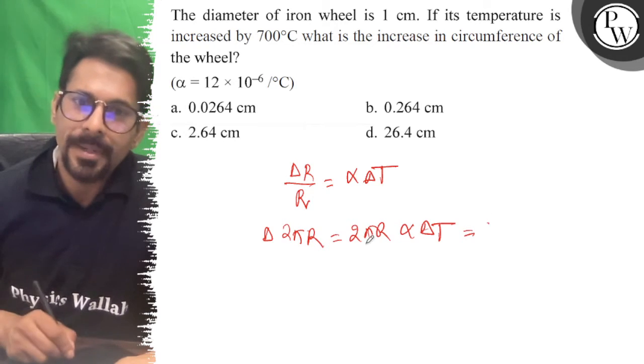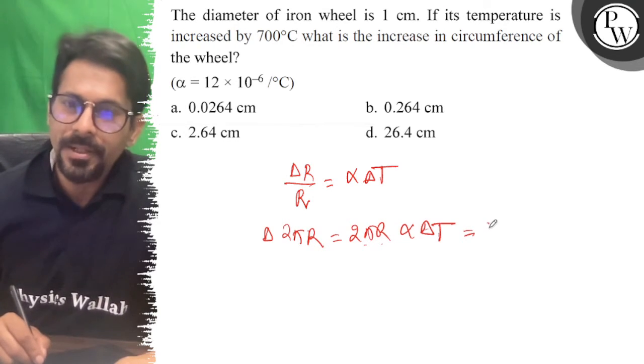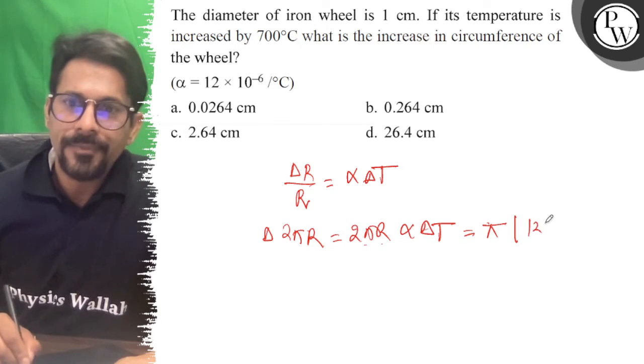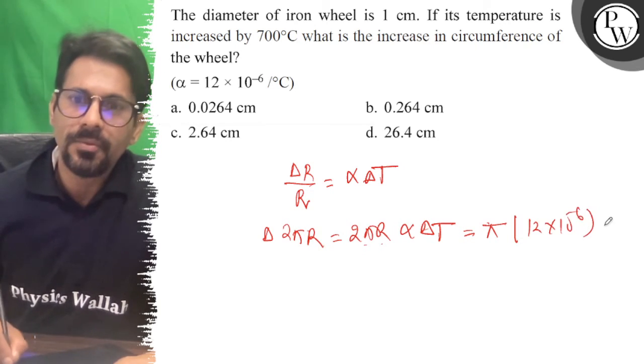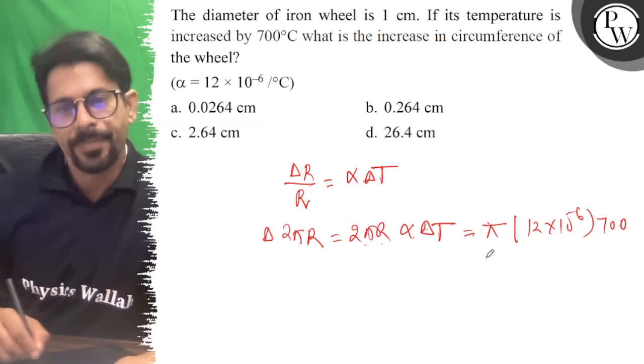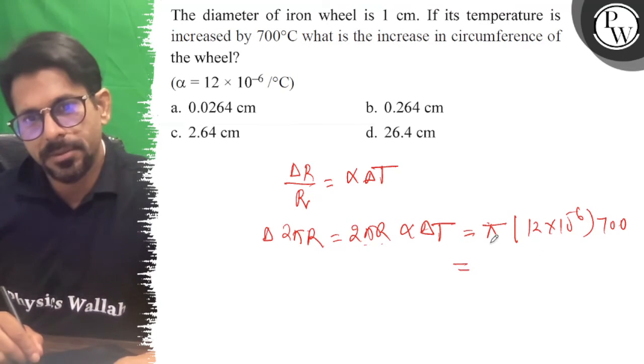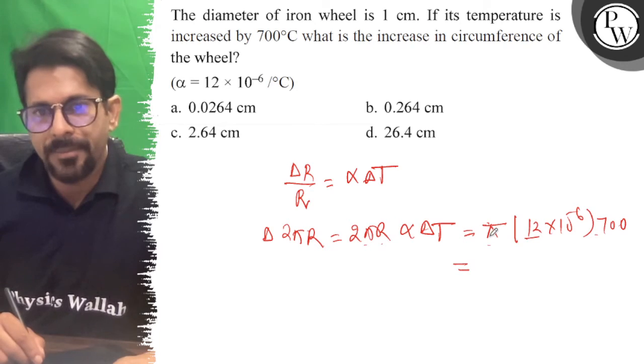...is 2πr. π into 2r is your 1, the diameter. So π into alpha is 12 into 10 to the power minus 6, into del t is 700. So you get 712π. By 7 is...